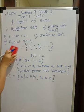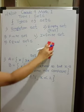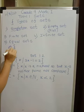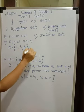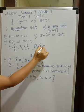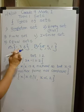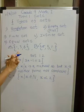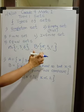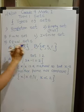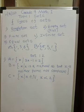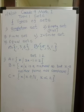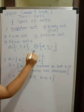Last is equal sets, which involves two sets. For example, set A has elements 1, 3, 6 and set B has elements 6, 3, 1. Even though the order is different, all elements present in A are present in B also. When all the elements of one set are present in the other set, we say sets A and B are equal sets. Two sets are said to be equal if every element of one set is in the other set, and we write A is equal to B.